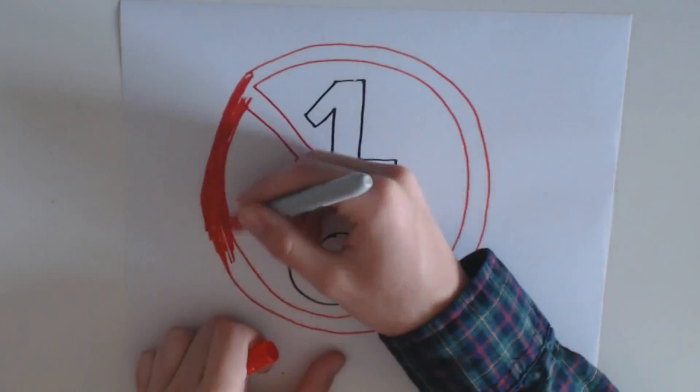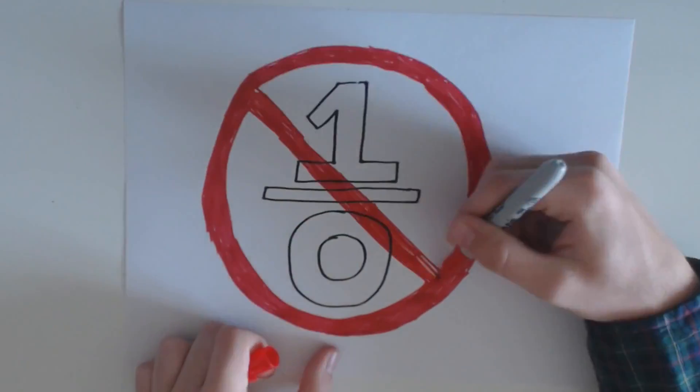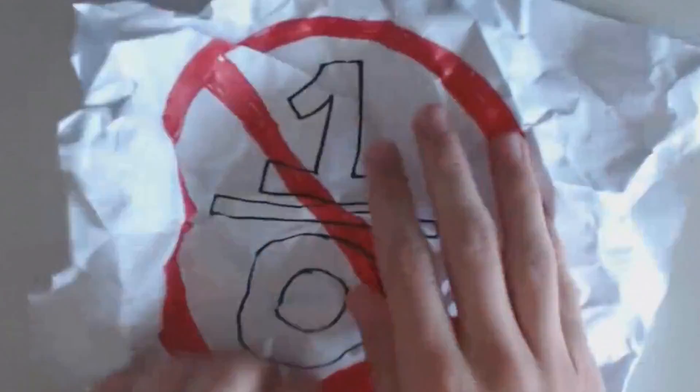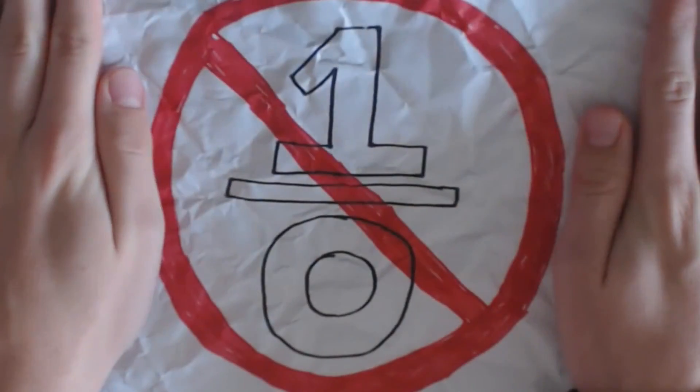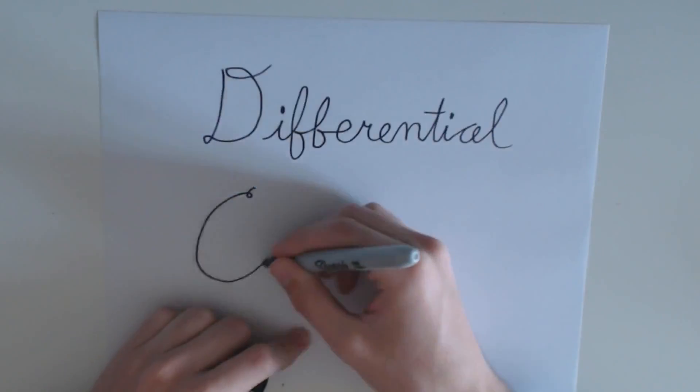All right, maybe division by zero is impossible. Who cares? It's not like you'd ever need to do it in real life. Actually, there's an entire branch of mathematics that's based on this idea of dividing by zero. Differential calculus.